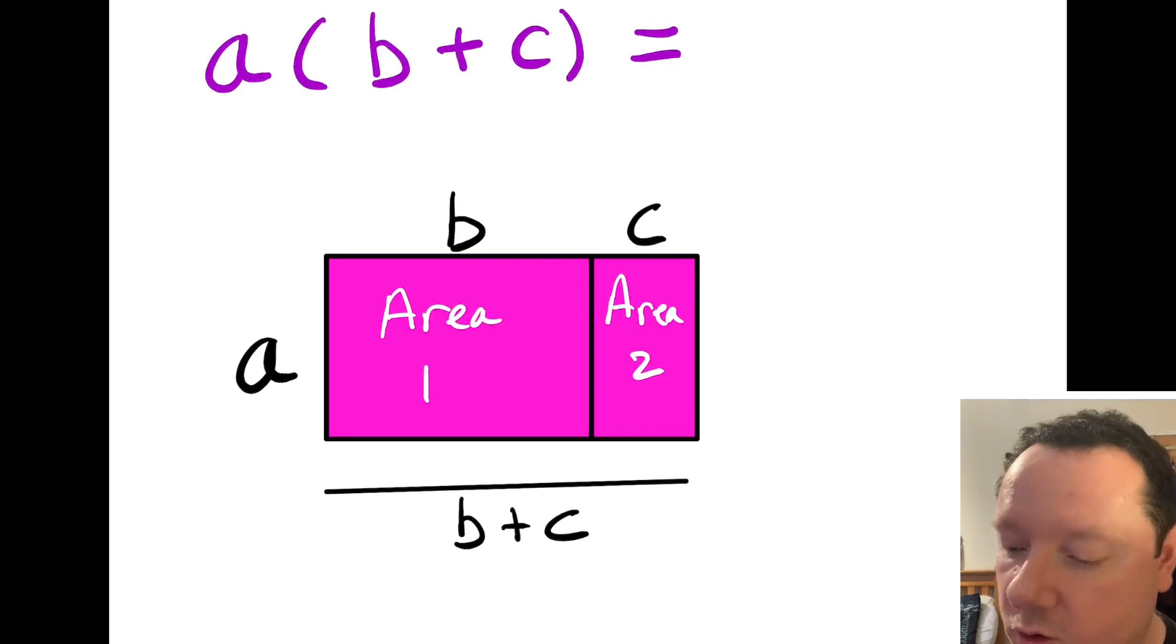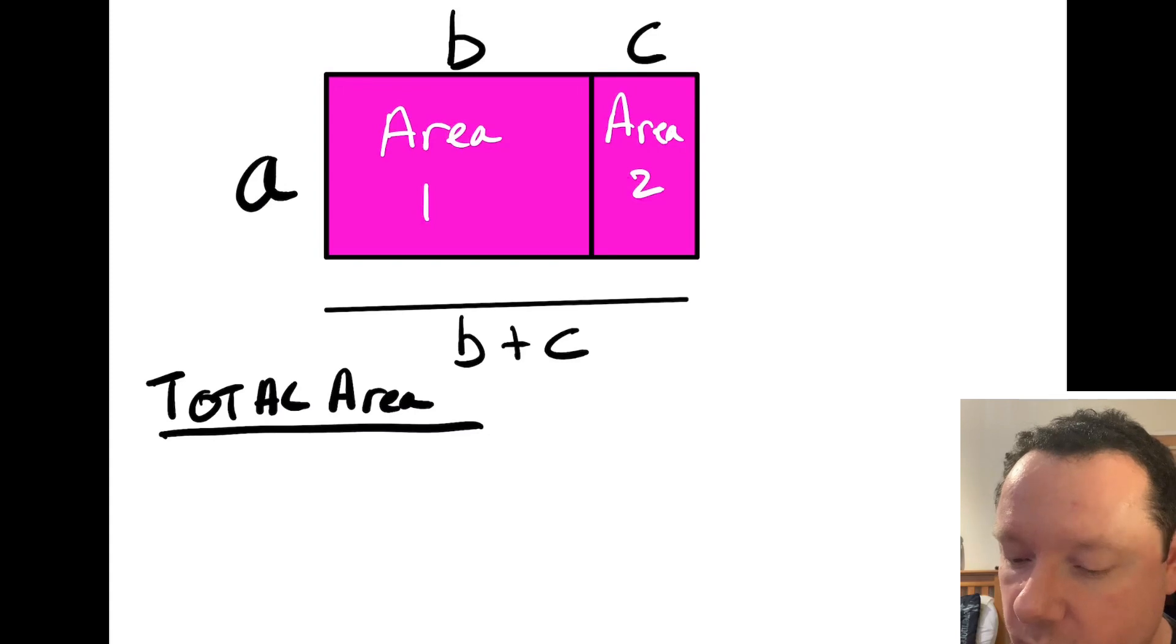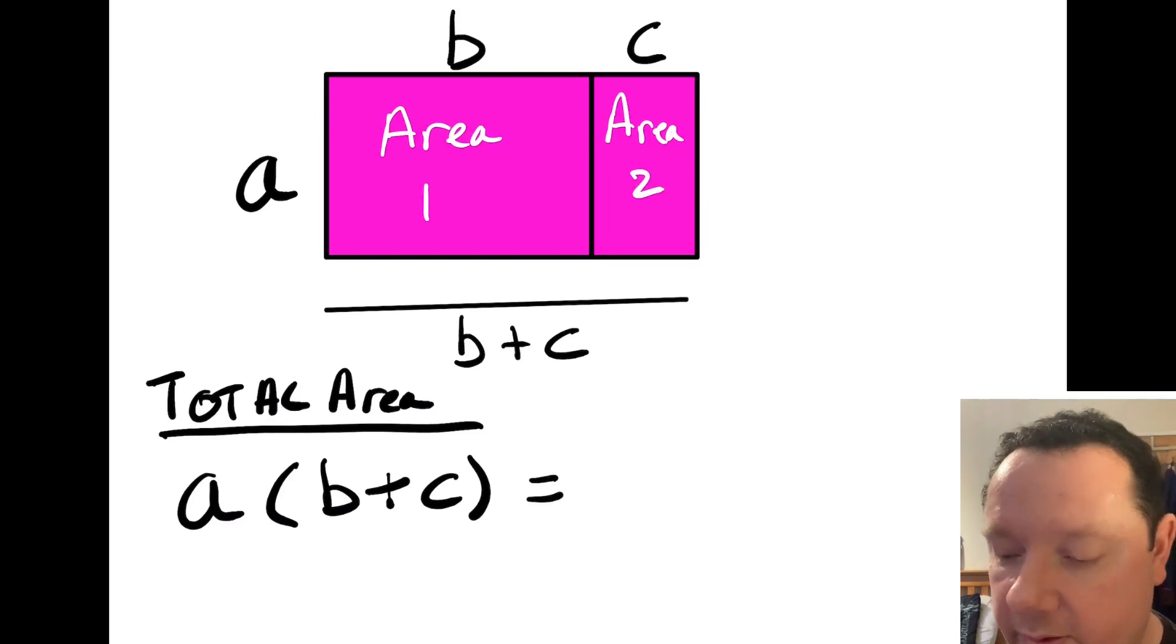So there's two ways to work out the total area of this shape. The first way I could work out the area of area 1 and area 2, then add them together. And the second way to work that out would be to work out the area of just the whole shape by times in the bottom length b and c times a. So if I write that down here, total area. So the first way I'm going to take the big shape all the way around. So it's a times b plus c. But the second way to get the total area, so it equals, if I look at area 1, that's a times b, so that's ab. And if I look at area 2, that's a times c, so that's add ac.